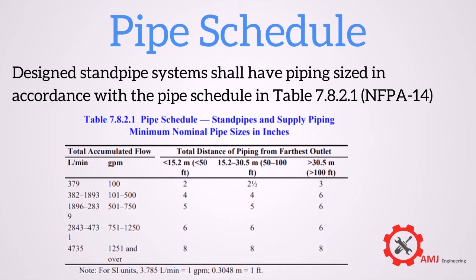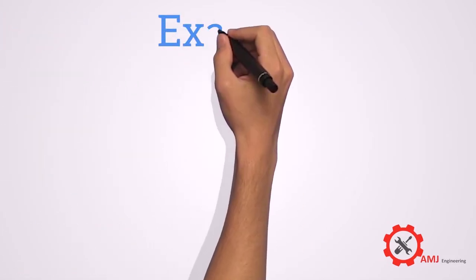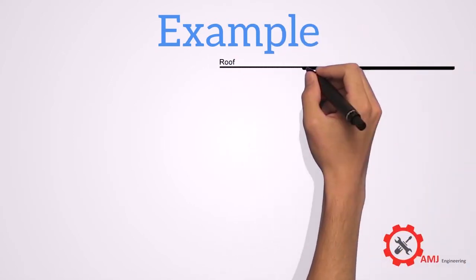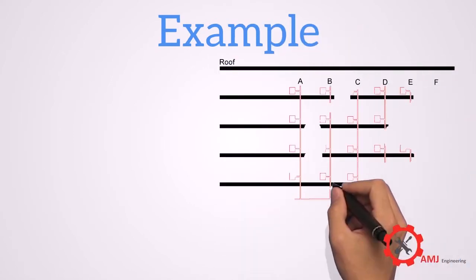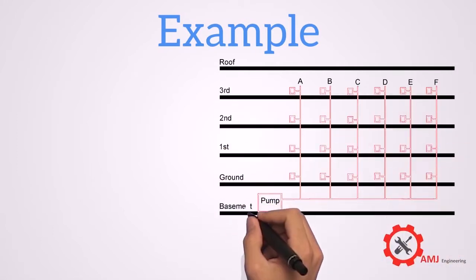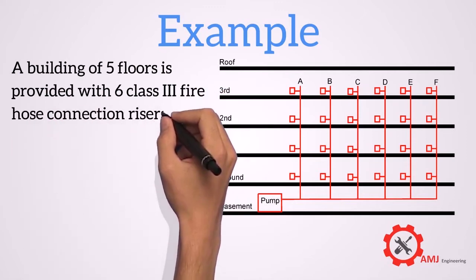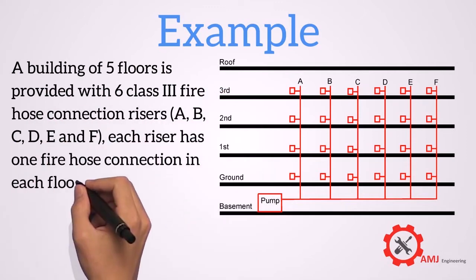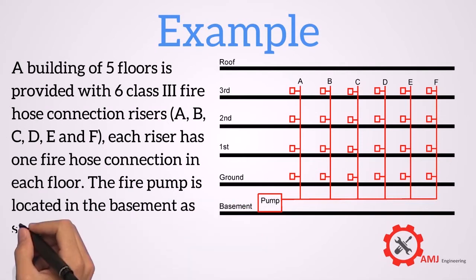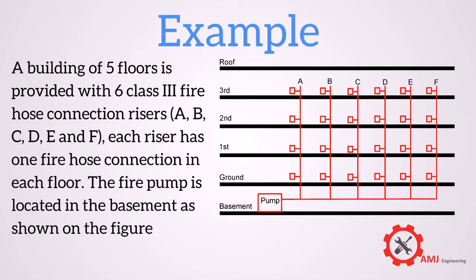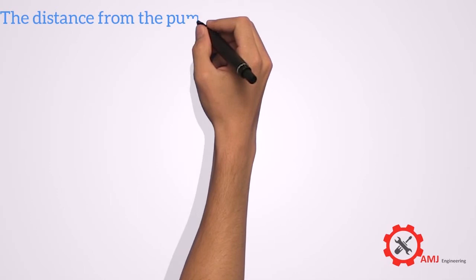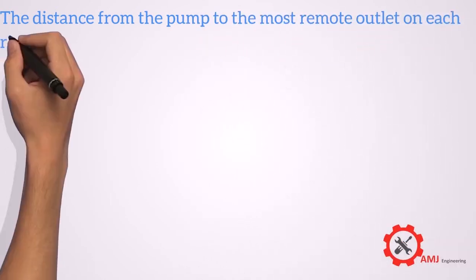Let's see an example. We have here a building with 6 class 3 firehose connection risers. I will start the sizing of risers first, then I will size the main pipes connecting the risers. Given below the distance from the pump to the most remote outlet on each riser.